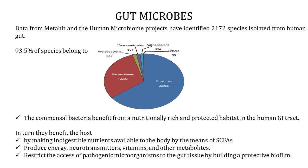These microorganisms have a lot of self-respect — they don't just live in our gut for free, but they pay the rent. The microbiota and the host have a mutually beneficial relationship which ensures a balanced habitat. These microorganisms digest dietary fibers and produce short-chain fatty acids such as butyrate, propionate and acetate, making indigestible nutrients available to the body, which provides energy and has neuroprotective functions. They also produce neurotransmitters, vitamins and other metabolites. Fermentation of saccharides by gut microbiota is the main source of energy for intestinal epithelial cells.